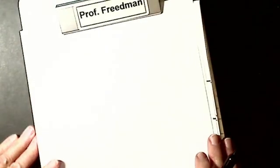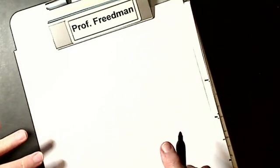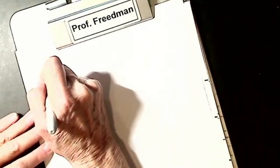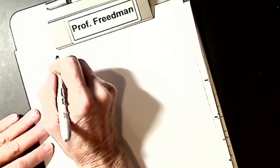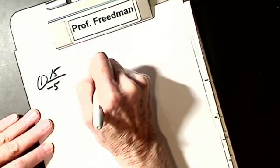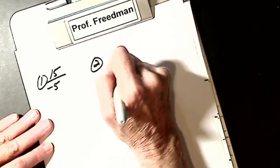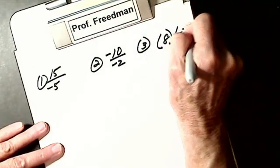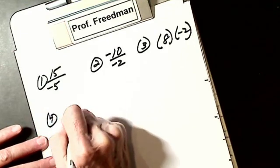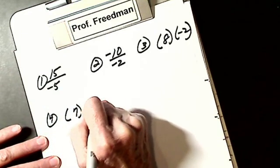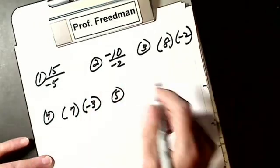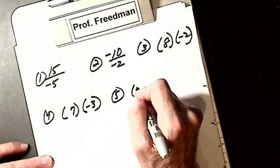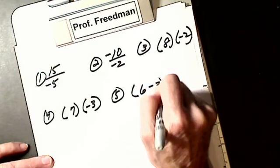So let's just practice a couple of multiplication and division. But I think you'll find this easy. Remember, multiplication and division, like signs are positive, unlike signs are negative. So let's say I have 15 divided by negative 5. Let's make it 10 divided by, we'll make this both negative. 3, multiplication, 8 multiplied by negative 2. 4, let's make it 7 times negative 3. Let's make 5, multiply 6 times negative 3.